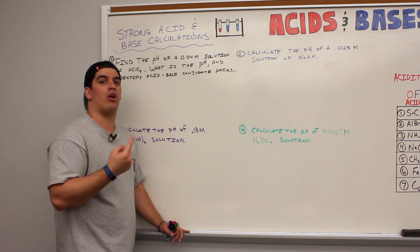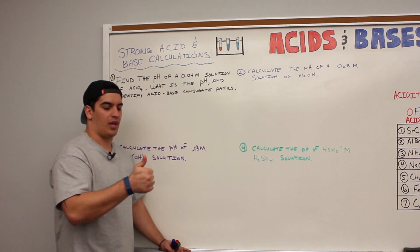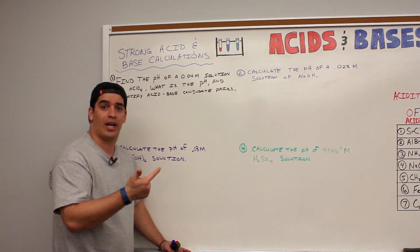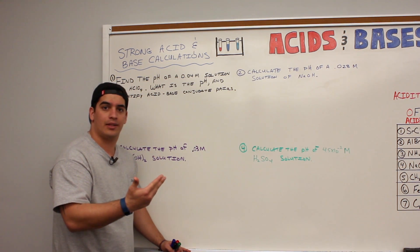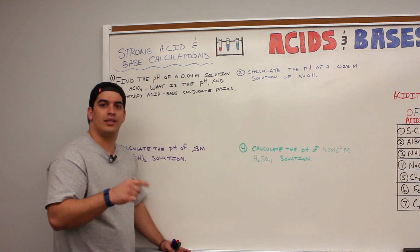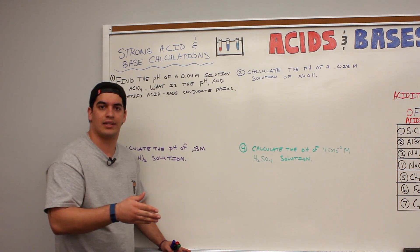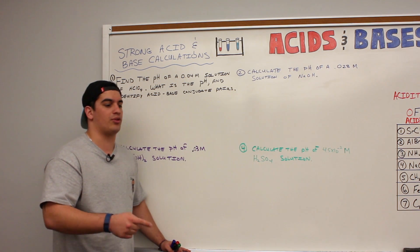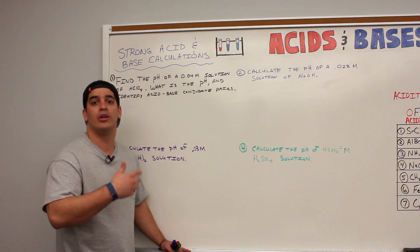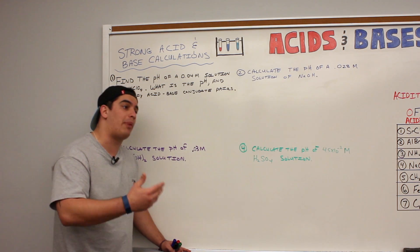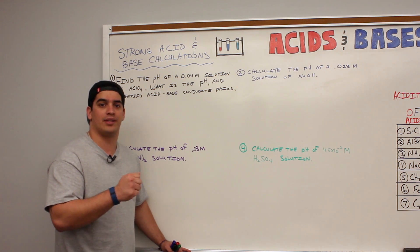If you remember, the strong acids are hydrochloric acid, hydrobromic acid, hydroiodic acid, perchloric acid, sulfuric acid, and nitric acid — those are your six strong acids. And the strong bases are sodium hydroxide, lithium hydroxide, potassium hydroxide, rubidium, strontium, barium, and calcium hydroxide. Those are your strong acids and strong bases.